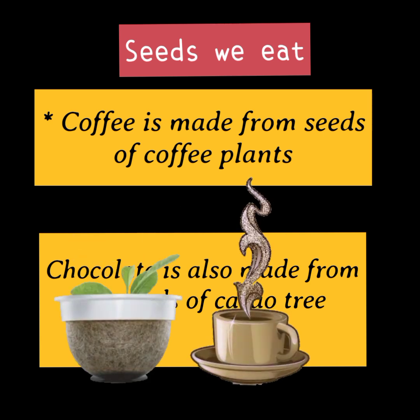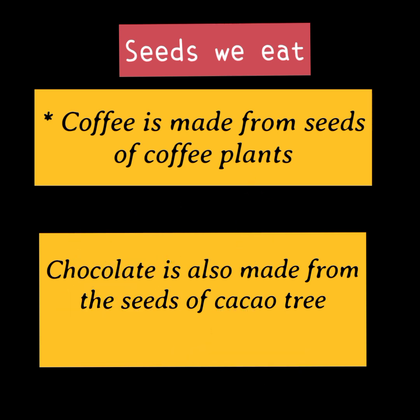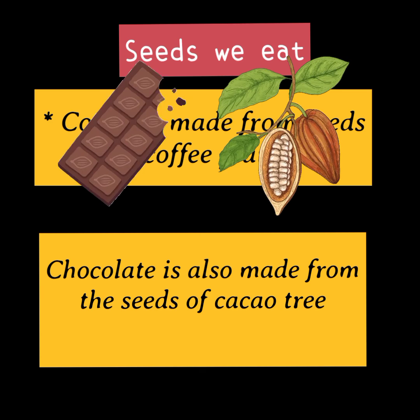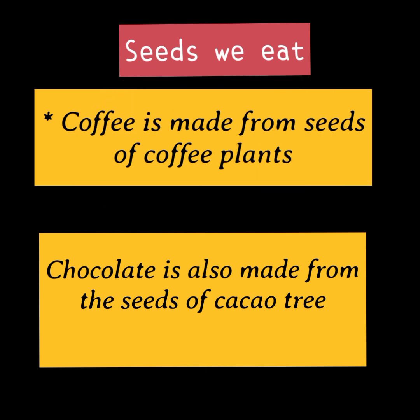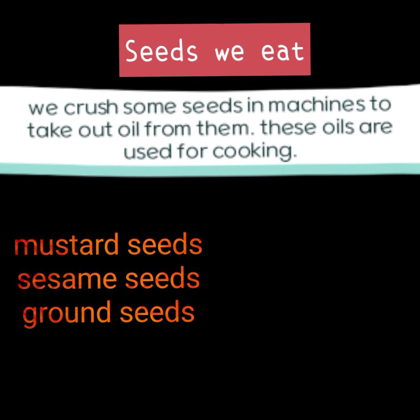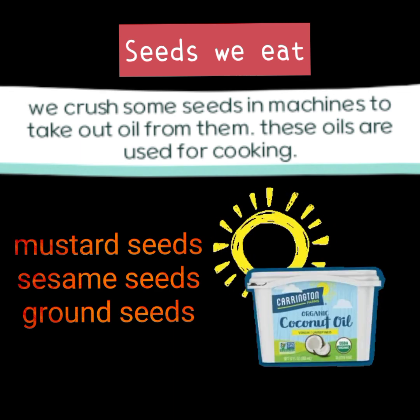Coffee is made from seeds of coffee plants. Chocolate is also made from the seeds of cocoa tree. We crush some seeds in machines to take out oil from them. These oils are used for cooking: mustard seeds, sesame seeds, groundnut seeds.